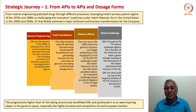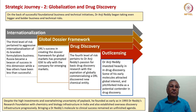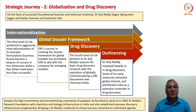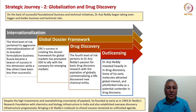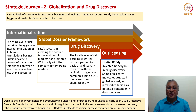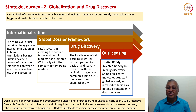DRL has since built up one of the largest portfolios of P4 FTF products in the entire generics world. The progressively higher level of risk-taking enormously benefited DRL, positioning it as an awe-inspiring player in the generics space, especially the highly lucrative and competitive US and European markets. On the back of successful foundational business and technical initiatives, the third level of risk pertained to aggressive internationalization of its generic formulations business. Russia became a beacon of success on this dimension. He created a global dossier framework, prompting GSK to ally with the company for emerging markets.